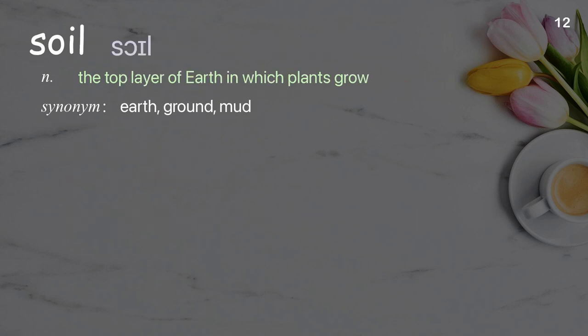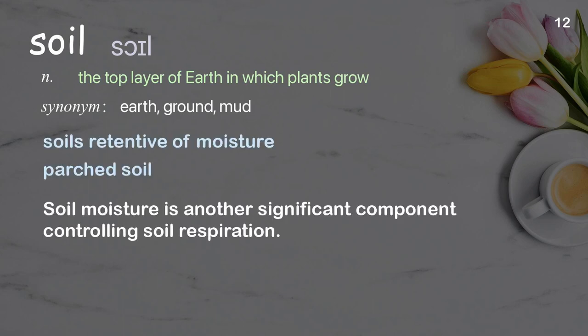Soil: the top layer of earth in which plants grow. Examples: soils retentive of moisture, parched soil. Soil moisture is another significant component controlling soil respiration.